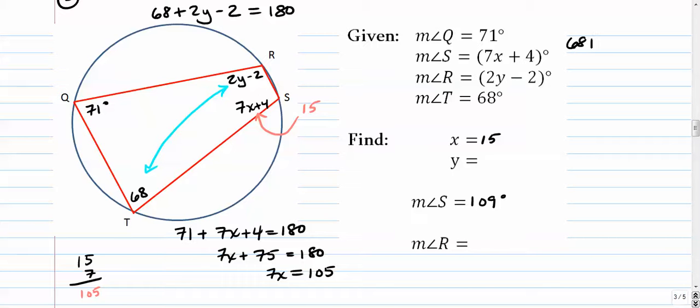So we're going to solve this equation. All right, maybe I'll take it over here. 68 plus 2y minus 2 equals 180. Let's add the 68 and the negative 2 together to get 66. Subtract 66 from both sides. I get 114. And that's going to be 57. We'll divide by 2 to get 57.